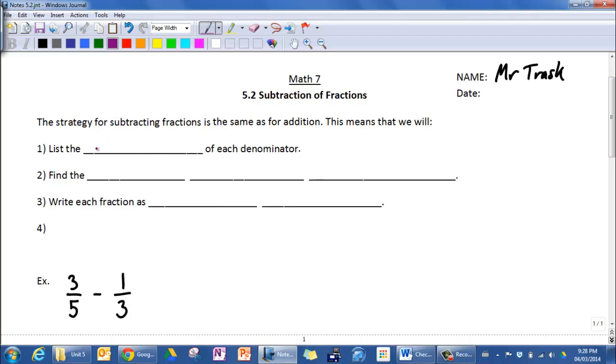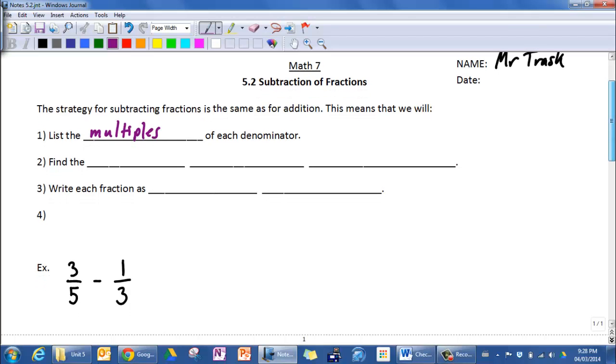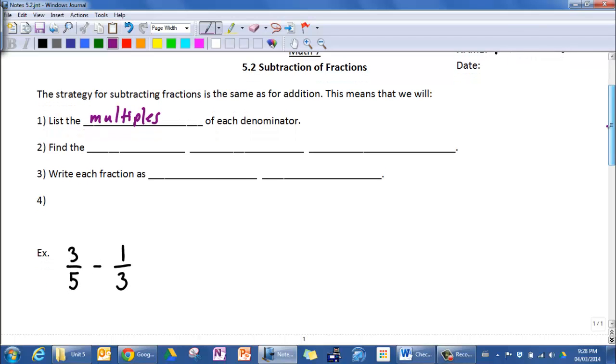So the first thing we need to do is we're going to list the first few multiples of each of our denominators. So we're going to list maybe the first four or five multiples, and what we're looking for is the lowest common denominator.